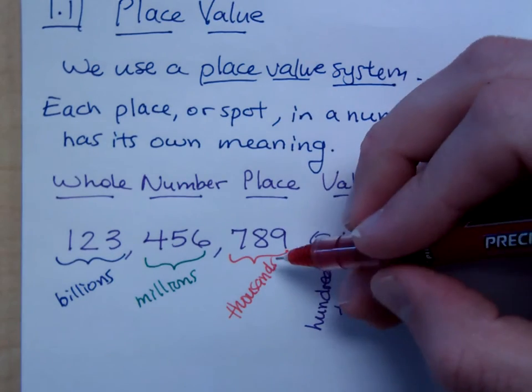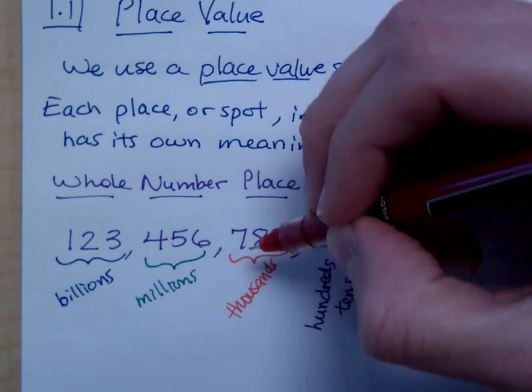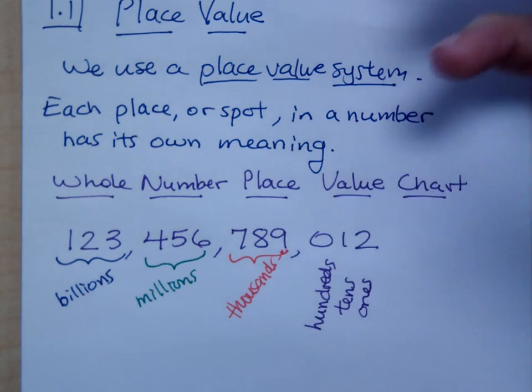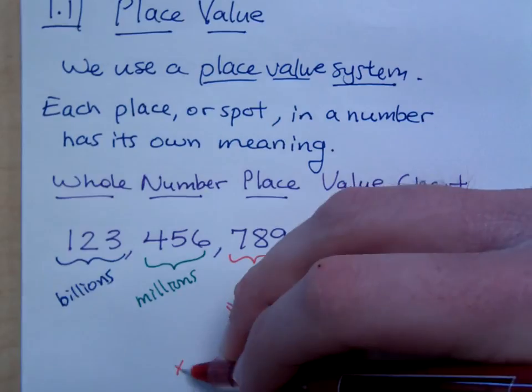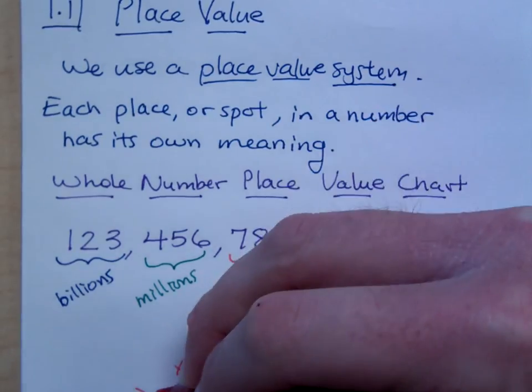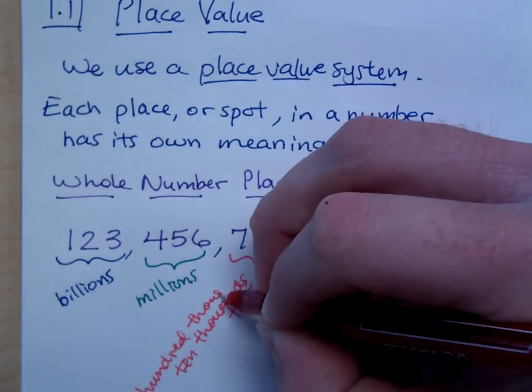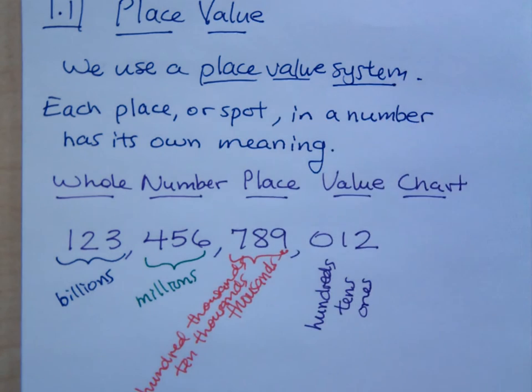Now, when I have the thousands here, we're talking about thousands. And then of course you would have nine thousands, and then you have ten thousands, hundred thousands, and then you go on to the millions.